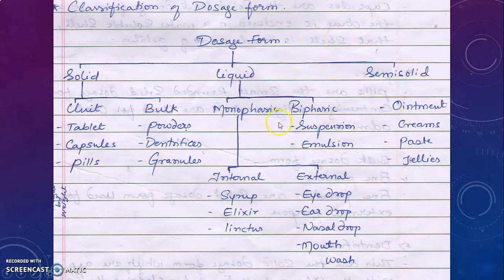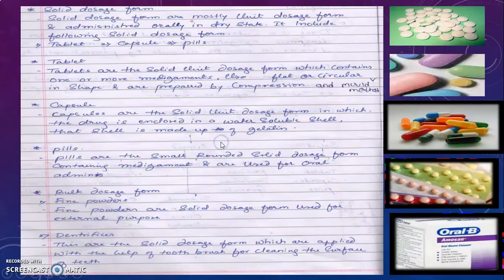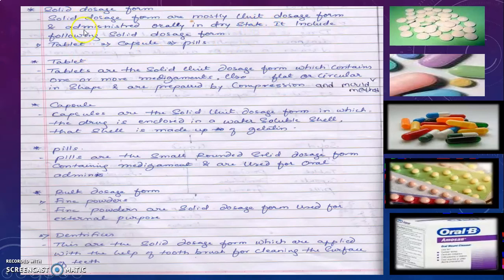This is the classification of dosage forms. Solid dosage forms are mostly unit dosage forms — those counted in numbers. They are administered orally in dry state. Examples of solid dosage forms are tablet, capsule, and pills.